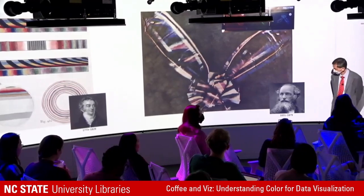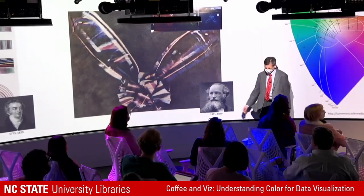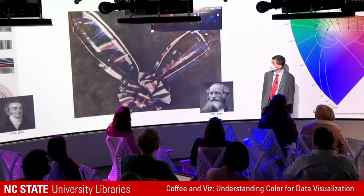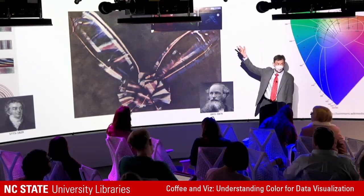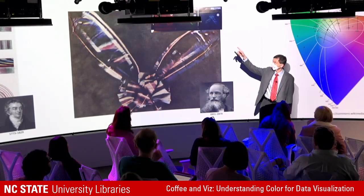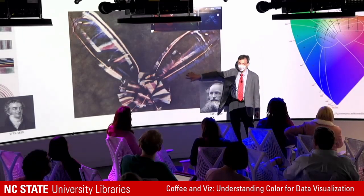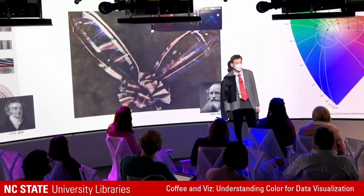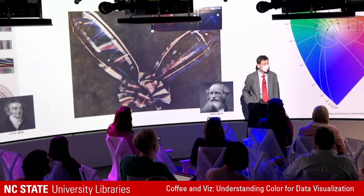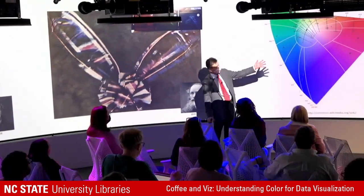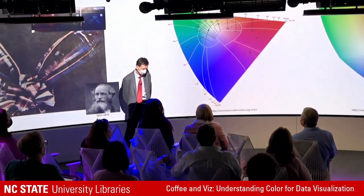Then we have James Clerk Maxwell, a Scottish researcher, who thought color was representable by a very small number of primaries. He chose red, green, and blue. He put color filters over a Scottish tartan and photographed or recreated each one, then combined them together to produce his final result. Most people consider this the first color photograph ever produced — that was back in the mid-1800s.